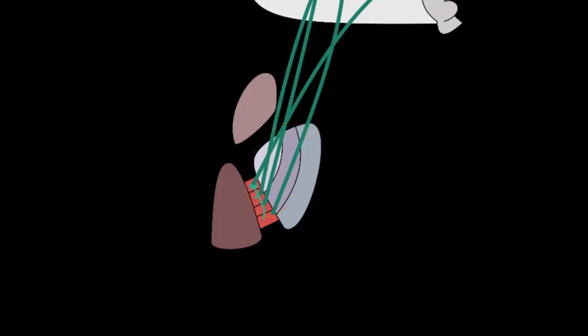The internal capsule itself can be divided into three parts. The anterior limb, the genu, or the knee, and the posterior limb. The corticospinal tracts can be found in the posterior limb, which is somatotopically organized.